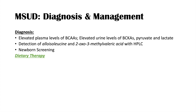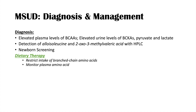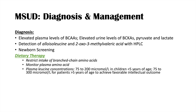To manage individuals, dietary therapy is a key option: restrict the intake of branched-chain amino acids and monitor plasma amino acid levels closely. Plasma leucine concentrations should be maintained between 75 to 200 micromoles per liter in children under five years of age, and 75 to 300 micromoles per liter for patients over five years of age to achieve a favorable intellectual outcome.